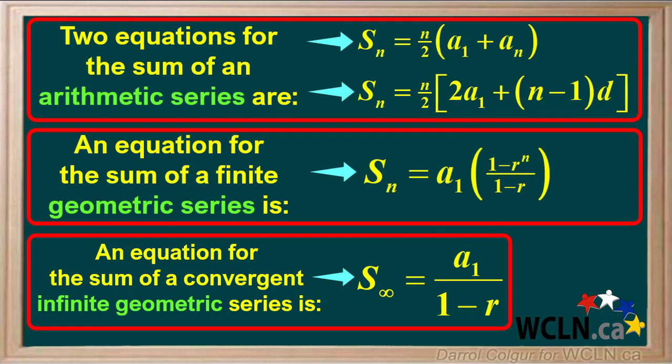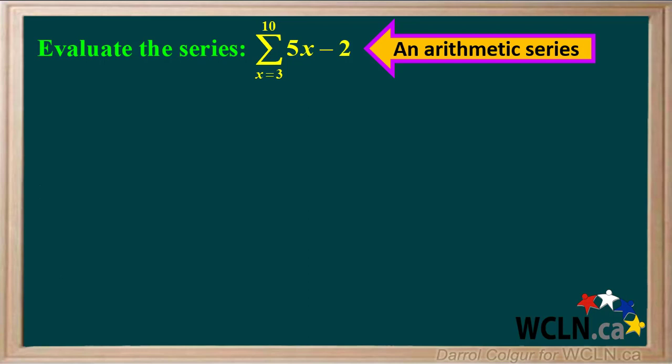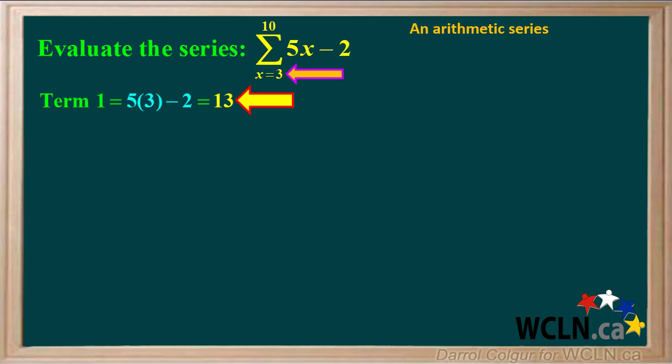We will be using these equations as we go through some examples. In our first example, we are asked to evaluate the series represented by this sigma notation. We see there are no terms with a variable in an exponent, so this is an arithmetic series. We start by finding the first few terms and the last term. For the first term, we put in 3 for x, giving us a value of 15 minus 2, or 13.